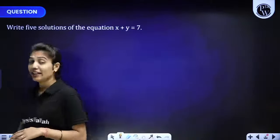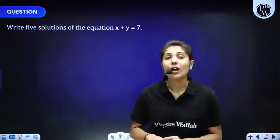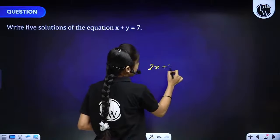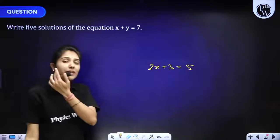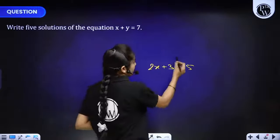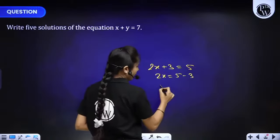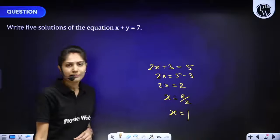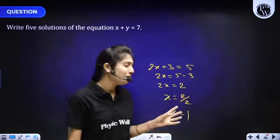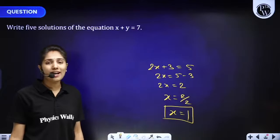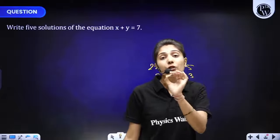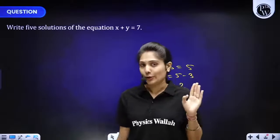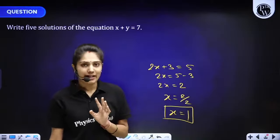Write five solutions of the equation. How do we write solutions? When we studied linear equations in one variable — for example 2x + 3 = 5 — we solved it: 2x = 2, so x = 1. That single unique solution was the answer. In linear equation in one variable, one unique solution comes — x has exactly one value.